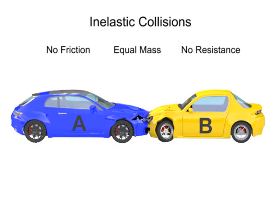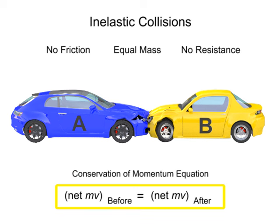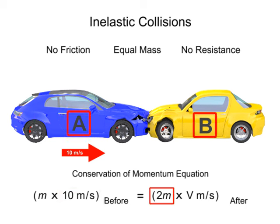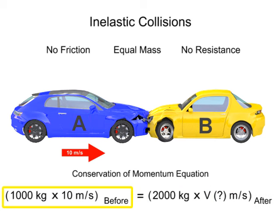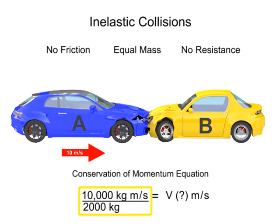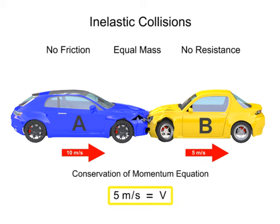The after-collision momentum is easily calculated using the conservation of momentum equation, where the mass of car A times its speed of 10 meters per second before the collision is equal to the mass of car A plus the mass of car B times the final velocity after the collision. Rearranging the equation to solve for the velocity after the collision gives 5 meters per second.